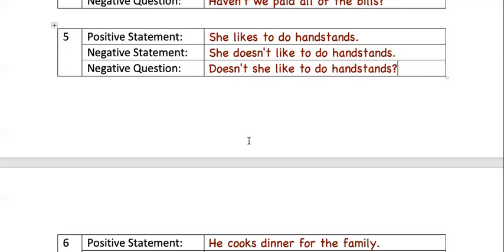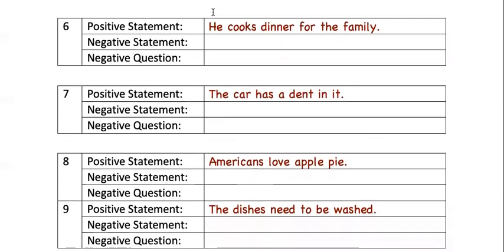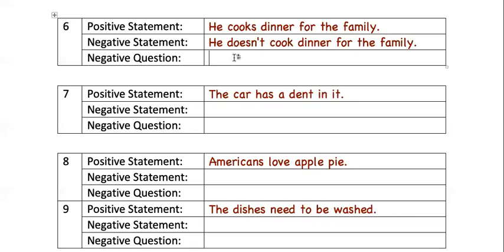Number six: the positive statement is 'He cooks dinner for the family.' The negative statement is 'He doesn't cook dinner for the family.' And the negative question is: 'Doesn't he cook dinner for the family?'